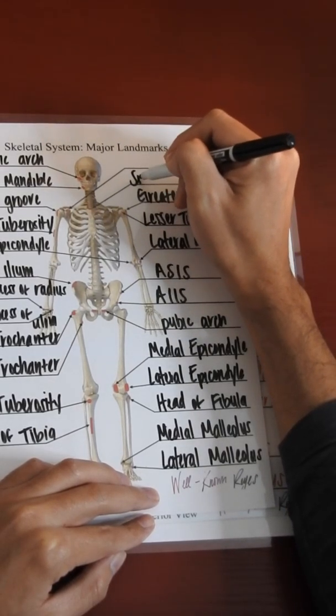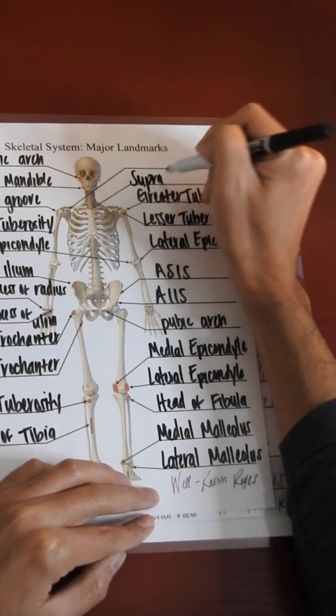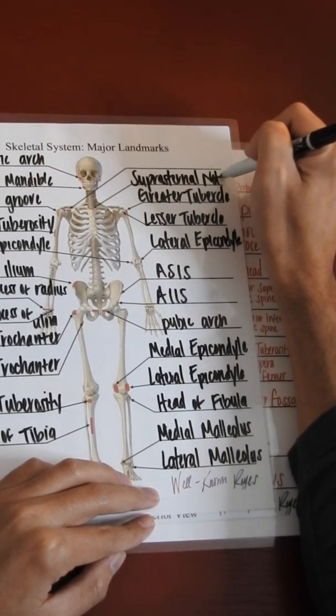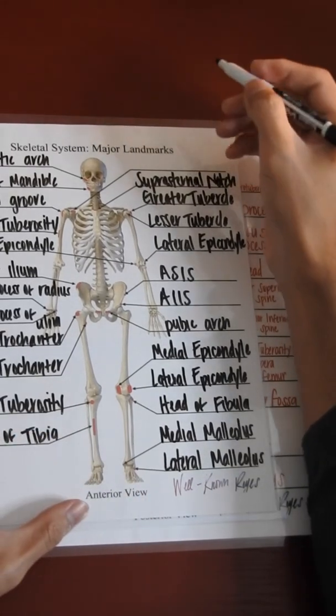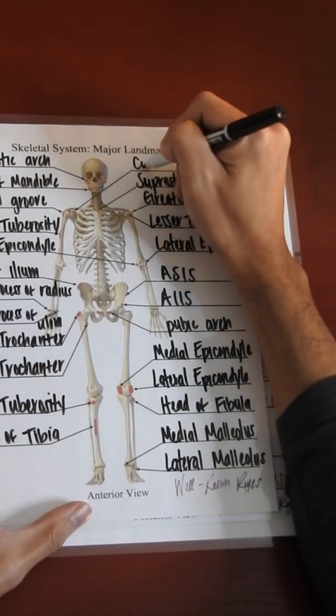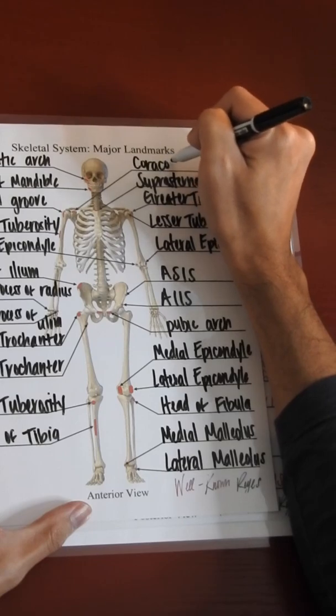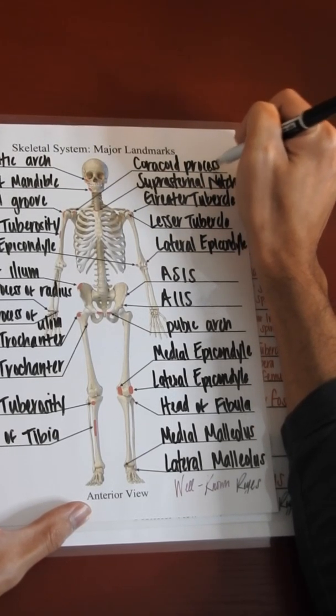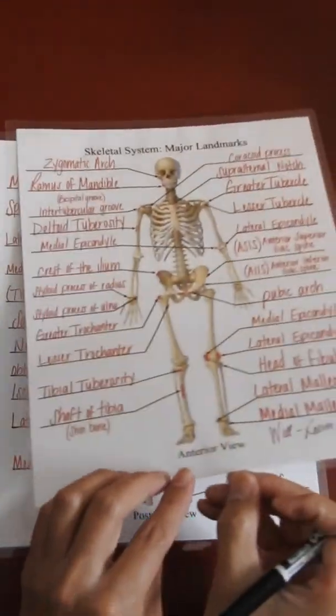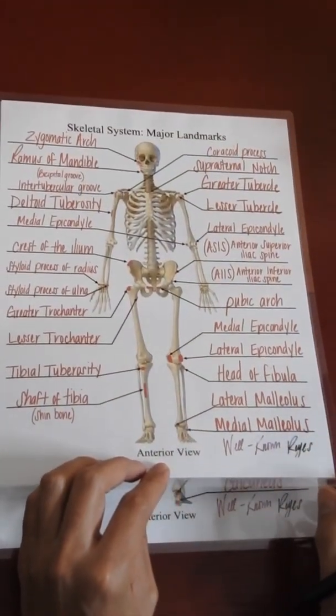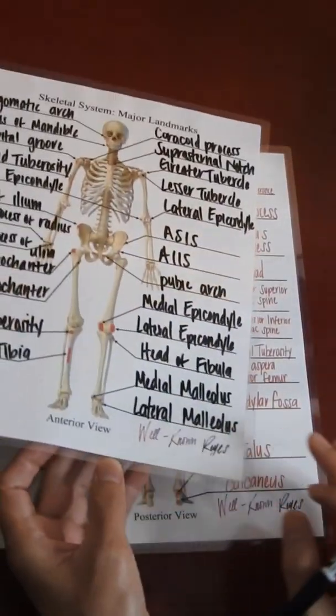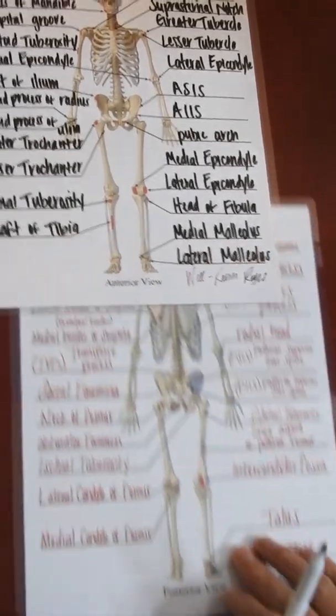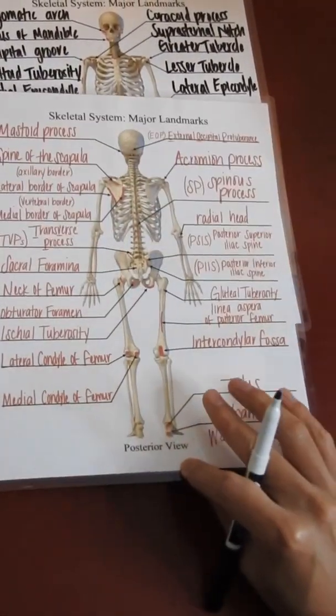The suprasternal notch, also known as the jugular notch, and then the coracoid process. Now we can go ahead and check our answers on the back. Very good, now let's go ahead and get started with the posterior aspect of the skeletal system.